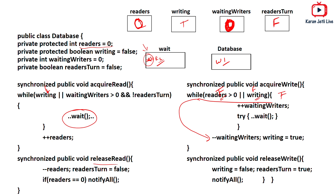Now suppose another writer W2 also wants to write. W2 calls acquire_write and checks: reader count is zero — false — or writing is true — true. True, so W2 increments waiting_writers to one and waits. W2 is now waiting.